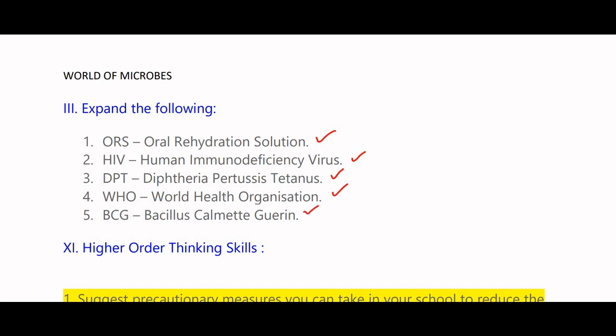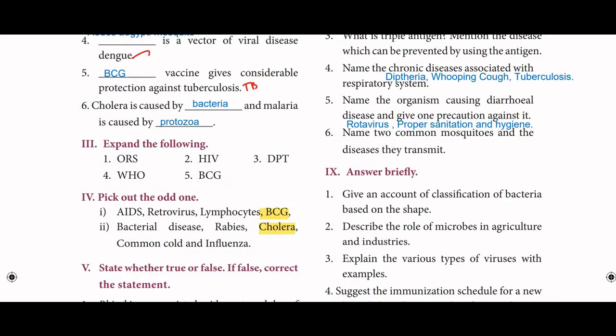So here is pick out the odd one. AIDS, retrovirus, lymphocytes, BCG — the odd one is BCG, because BCG is the vaccine. Next: bacterial disease, diabetes, cholera, common cold and influenza — the odd one is cholera.